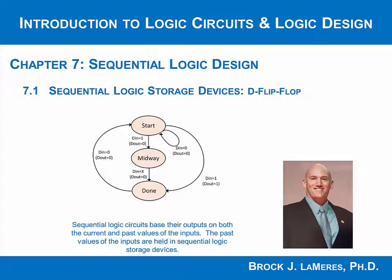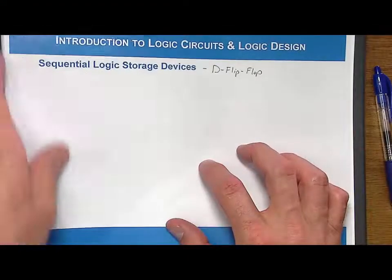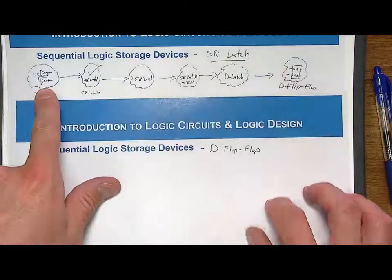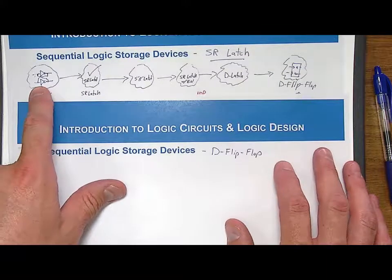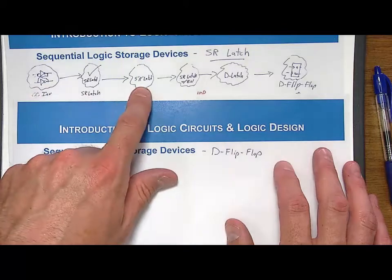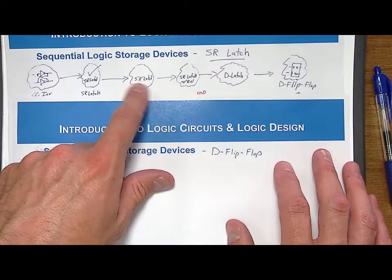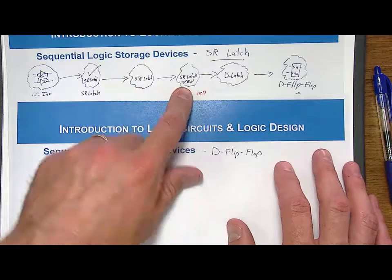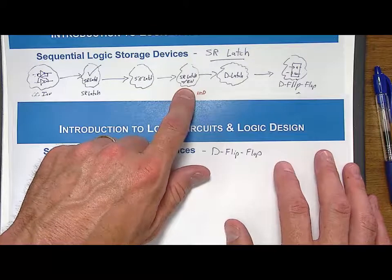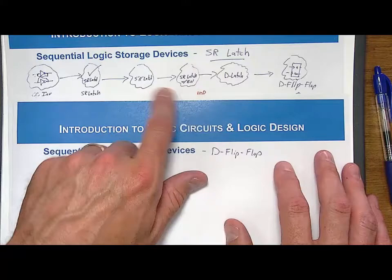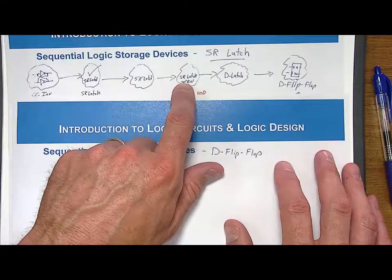We've looked at the last sequential logic storage device, the D flip-flop, and it's taken a set of interim steps to get here. We moved from the cross-coupled inverter pair to the SR latch, where the cross-coupled feedback loop had inputs. We made an S-bar R-bar latch so we could have the opposite polarity depending on whether you set or reset. Then we made the SR latch with enable, which introduced a new signal called C or clock — a way to have one signal tell the latch whether to store or operate normally.